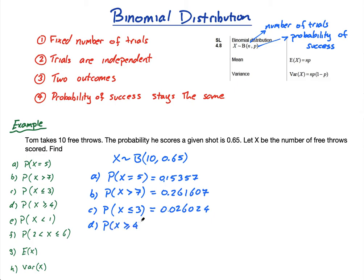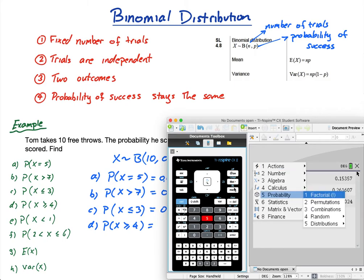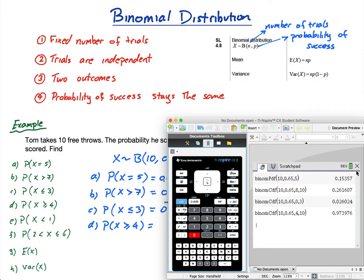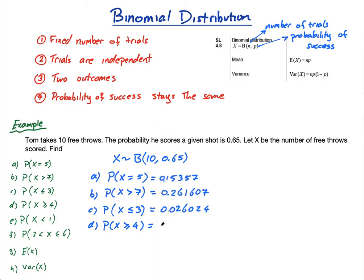Part D: P(X ≥ 4). Using CDF with n=10, p=0.65, lower bound=4, upper bound=10. Answer: 0.973976. Notice that P(X ≤ 3) plus P(X ≥ 4) equals exactly 1 — that's because less than or equal to 3 or greater than or equal to 4 covers everything that can happen: 0,1,2,3 or 4,5,6,7,8,9,10.